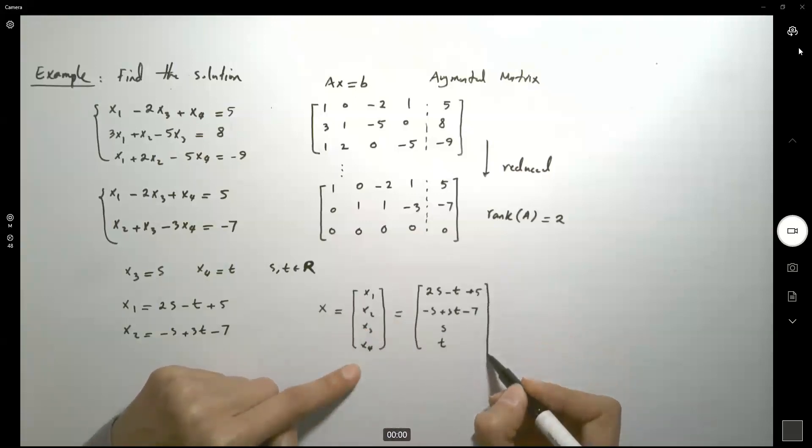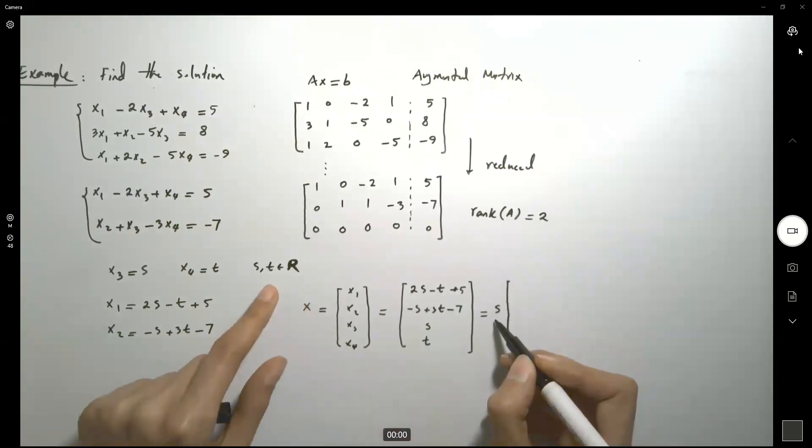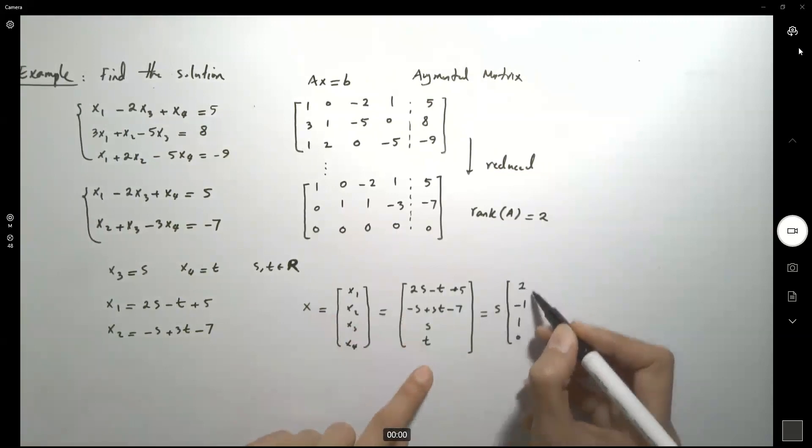Which can be written as, here you have s times, s is a scalar, so it's just a number guys, so it is 2, negative 1, 1 and 0.